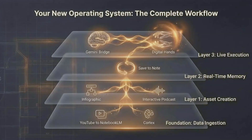Let's lock in the workflow one last time. First, use the Chrome extension to migrate your data instantly — no more copy and pasting. Second, use asset generation to turn that boring data into active coaching. Third, use the save-to-source loop to fully cure AI amnesia and take advantage of those 2.5 million words in your NotebookLM account. Most importantly, use the Gemini bridge to give your static notebook live hands on the internet and to upload agents to Gemini.